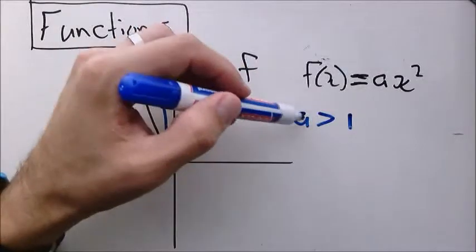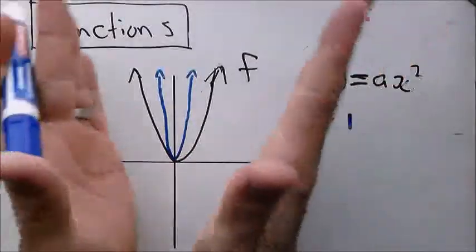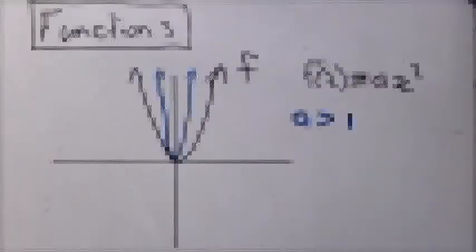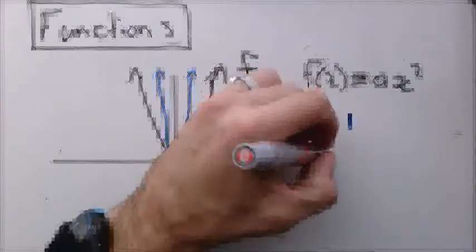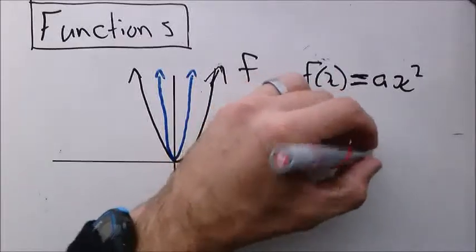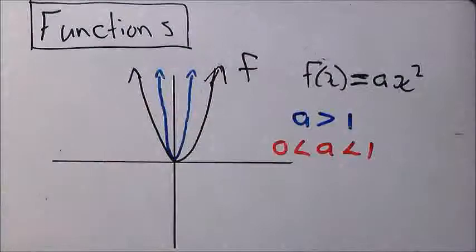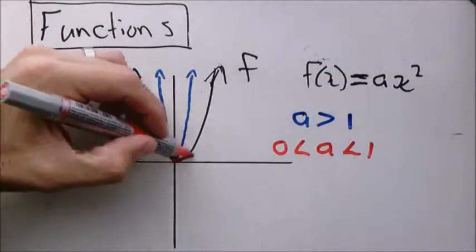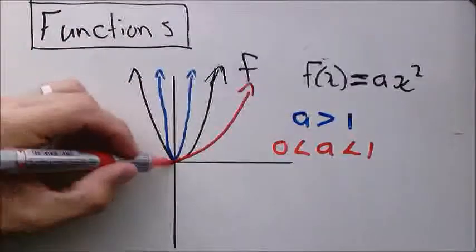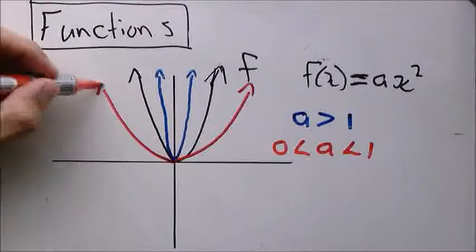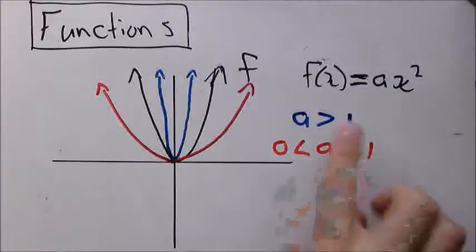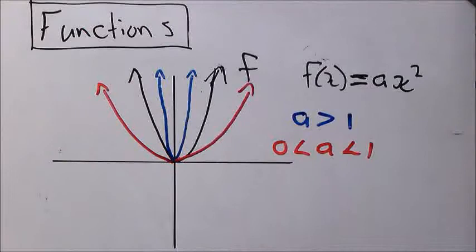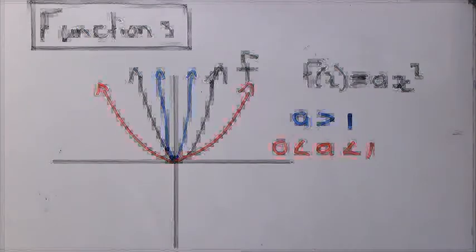If a is bigger than one it will become steeper. Now if a becomes a fraction — smaller than one but bigger than zero — the graph will become wider. That's the effect of constant a, and we're only sticking with positive values for now.